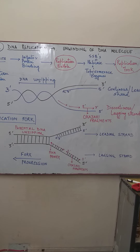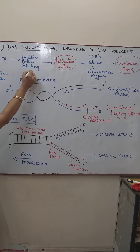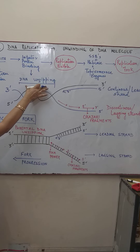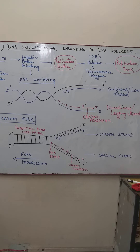Now we are discussing Step 2. After the site has been identified for DNA replication by specialized proteins, there are initiator proteins present at the origin of replication within the DNA itself. These initiator proteins lead to the unzipping or unwinding of the DNA molecule. DNA exists in the form of a double strand, and this initiator protein binding causes the unzipping or unwinding of the DNA double helix.